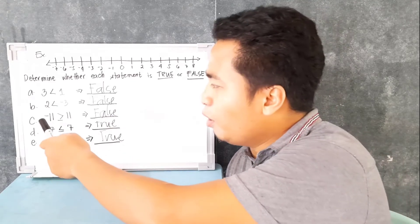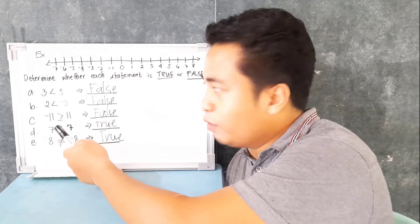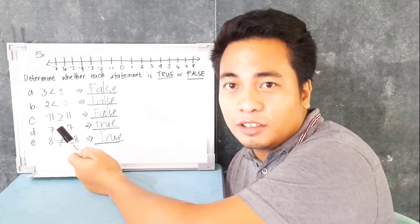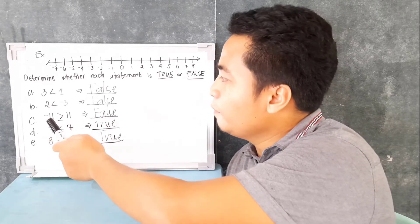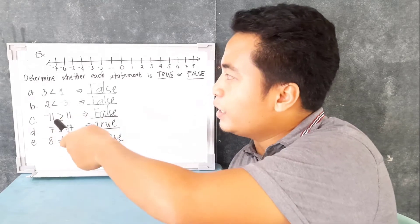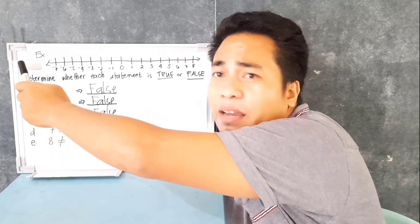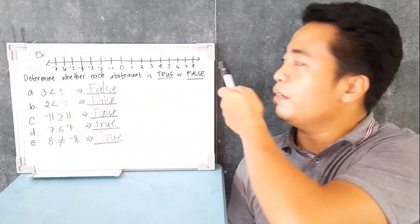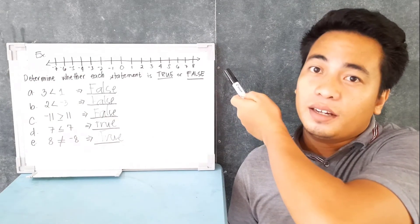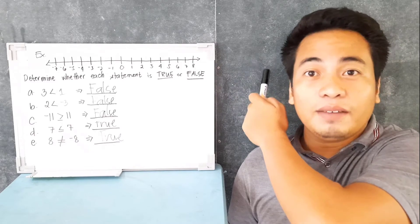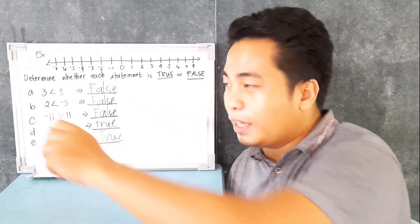Next example: negative 11 is greater than or equal to 11. True or false? False. Why? Because if you would look at this in the number line, negative 11 is somewhere here and positive 11 is here. So supposedly positive 11 is greater than negative 11.